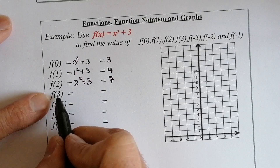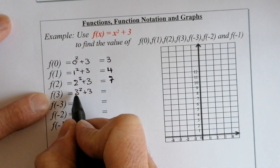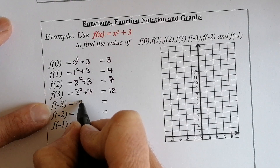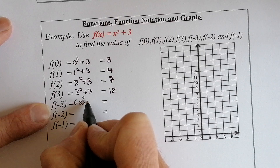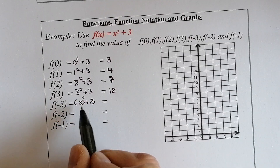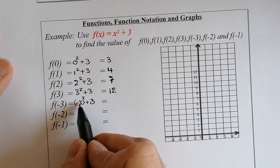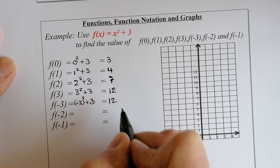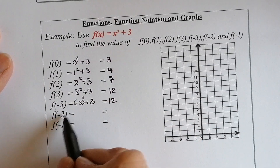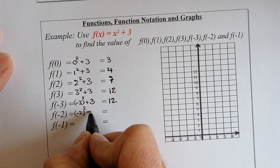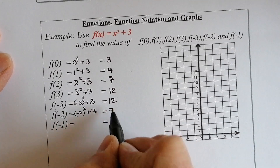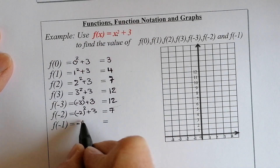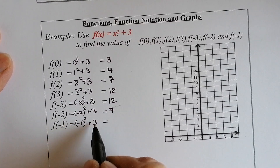Now the negative values. f of minus three: negative three squared plus three — remember it's the whole negative three being squared, so minus three times minus three is positive nine, plus three gives 12. f of minus two: negative two squared plus three equals four plus three equals seven. f of minus one: negative one squared plus three equals one plus three equals four.